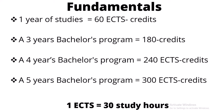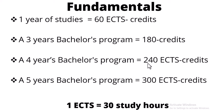First, you need to know that one year of studies equals 60 ECTS credits. When you have a three-year bachelor's program that gives you 180 ECTS credits, a four-year bachelor's program is equivalent to 240 ECTS credits, and a five-year bachelor's program gives you 300 ECTS credits.